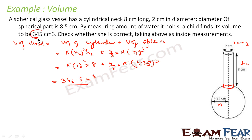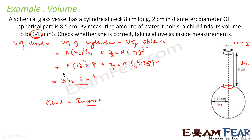The volume the child found was 345 cm³, but the volume we calculated is 346.5 cm³. That means the child is incorrect — not exactly incorrect, but partially incorrect, because he came very close. The actual value is 346.5 cm³, not 345 cm³.